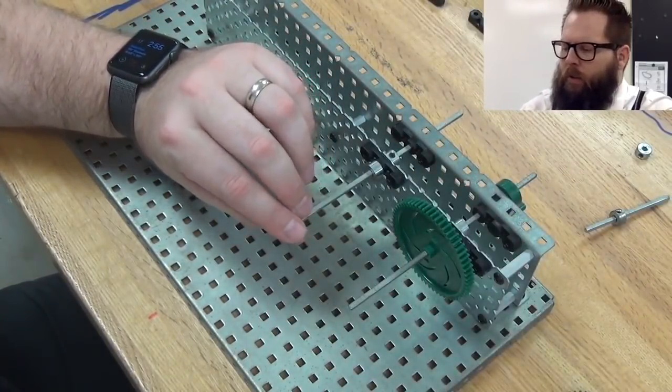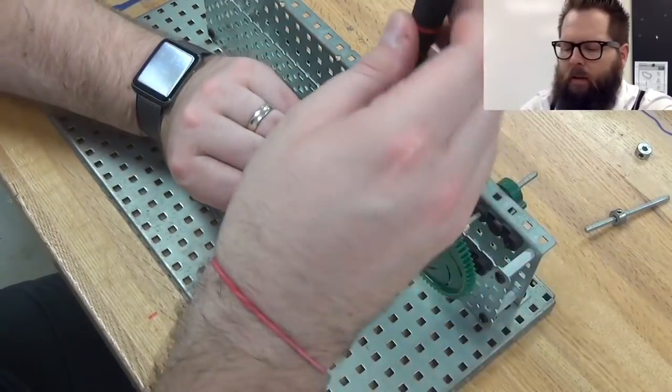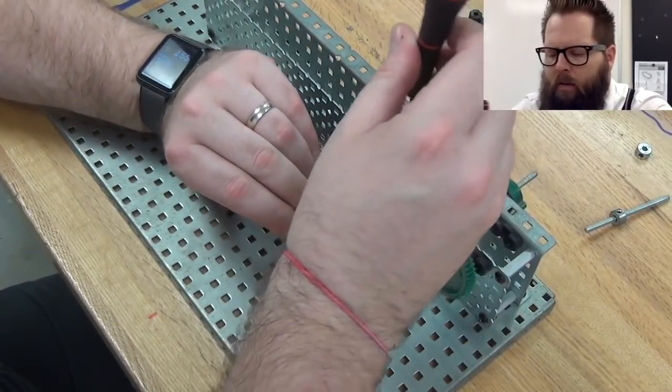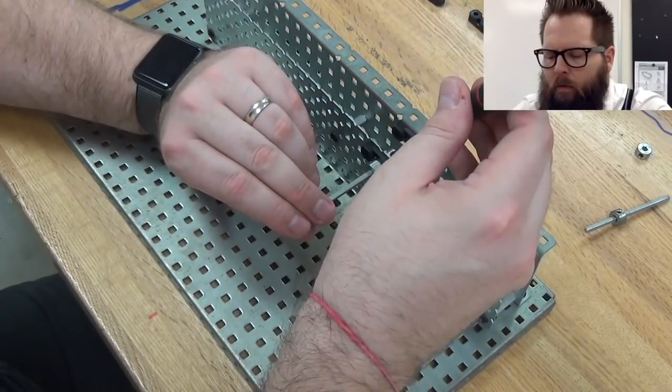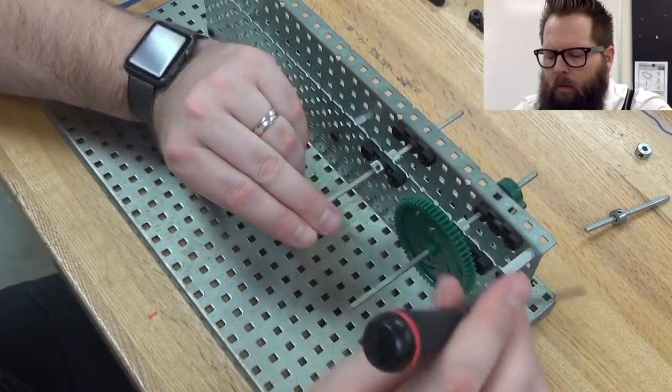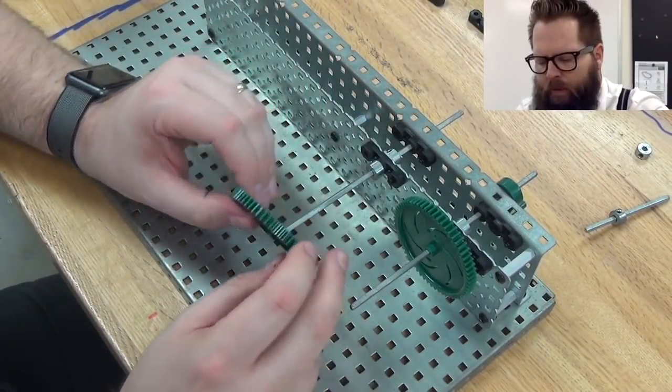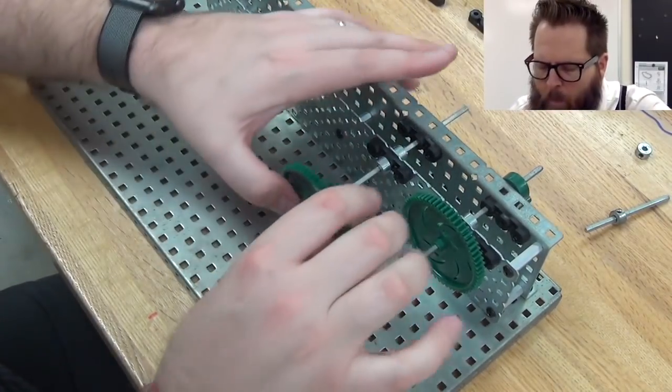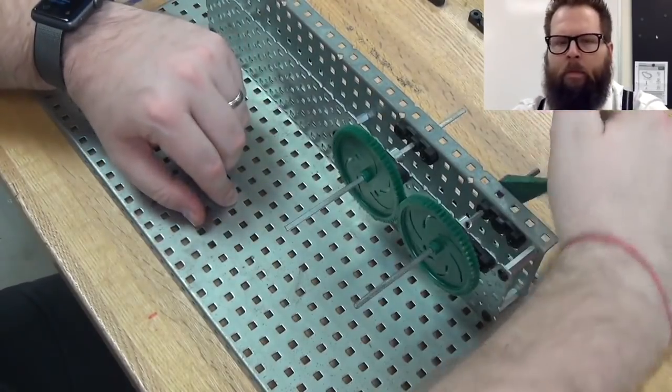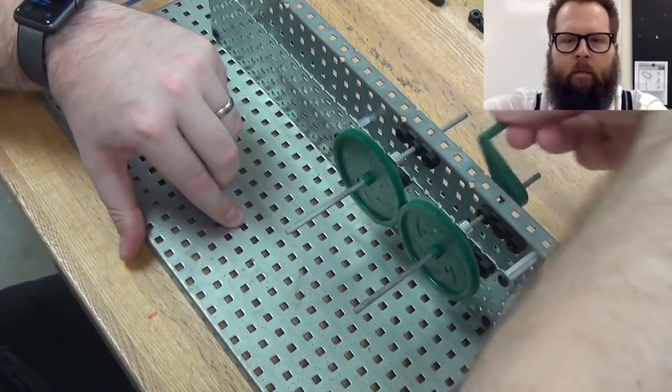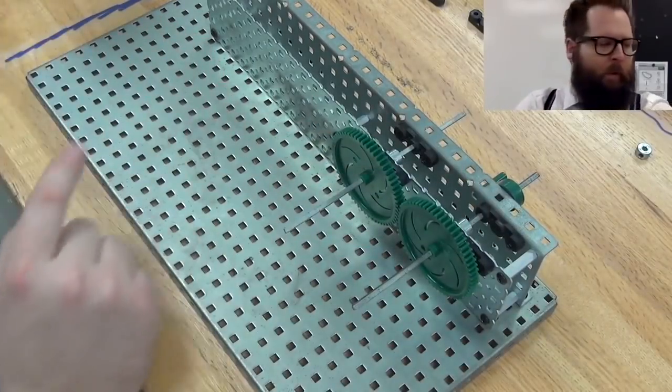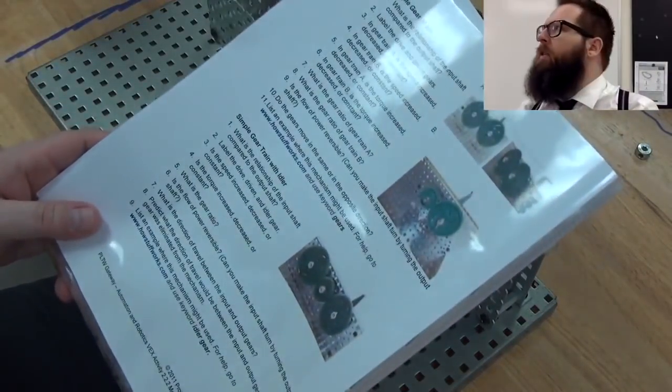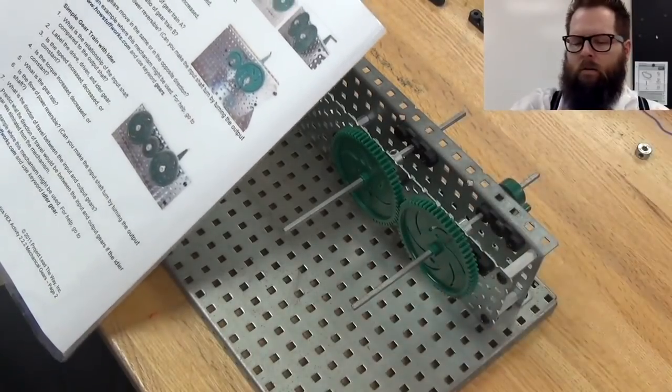Not too tight because you don't want to strip out the thing. And, ooh, I got it too tight. There we go. Now I can put this gear on. There we go. Simple gear train. I can turn it right here and I get an input and output. Make sure you answer your questions.